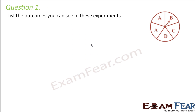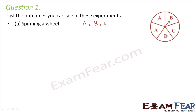Question number one: list the outcomes you can see in these experiments. Spinning a wheel — as you can see in the picture, what are the possible outcomes? The possible outcomes could be A, B, C, and D. These are the four possible outcomes.